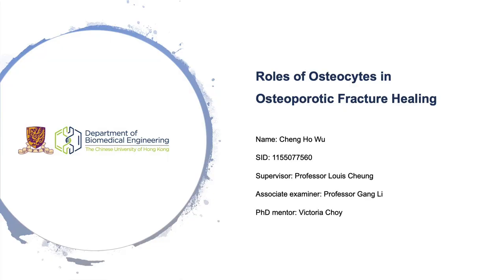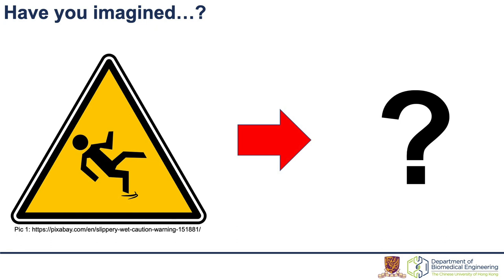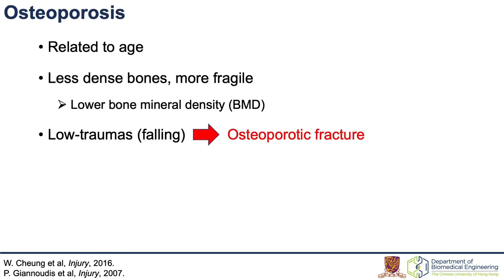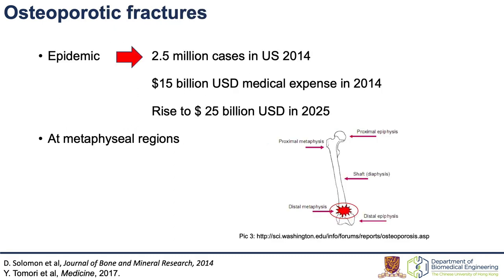Have you imagined a slippery fall would cause serious outcomes? Fracture. But of course, it is rarely happened for young people. Instead, the major group of sufferers is those who are aged, since osteoporosis is an age-related disease where our bones have lower bone mineral density and become more fragile. So it is likely to suffer from fractures during low-energy trauma, like falling. And this is called osteoporotic fracture.